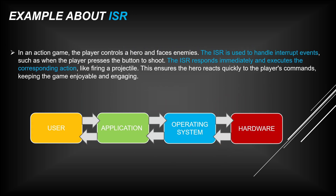Example of ISR: imagine playing an action game like Valorant. The player controls a hero and faces enemies. The ISR handles interrupt events — such as when the player presses the button to shoot. The ISR responds immediately and executes the corresponding action, like firing a projectile, ensuring the hero reacts quickly to player commands. Looking at the diagram: the user presses shoot, the call goes to the application, then the operating system, then hardware. The hardware responds back through the OS to the application, and the user sees the shooting animation. This is a critical task that ISR must execute.